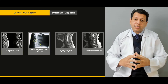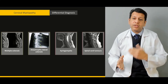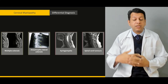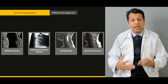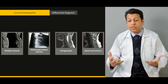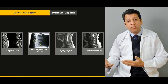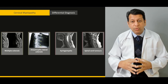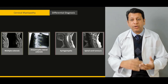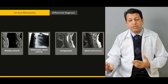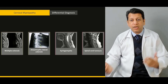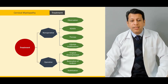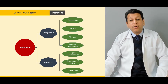We'll briefly discuss the differentials and why diseases such as multiple sclerosis, ALS, syringomyelia, and cord tumors are included in the cervical myelopathy differential, and what signs point toward cervical myelopathy versus these other diagnoses. From there we'll move on to treatment.